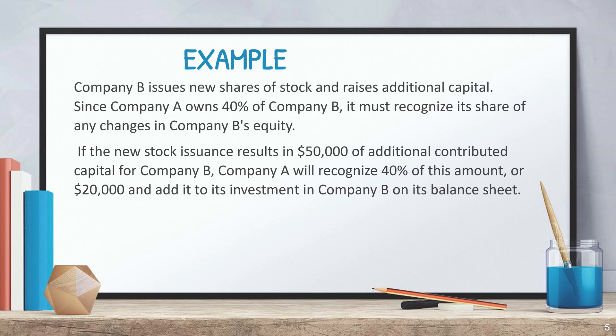If the new stock issuance results in $50,000 of additional contributed capital for Company B, Company A will recognize 40% of this amount, or $20,000, and add it to its investment in Company B on its balance sheet.